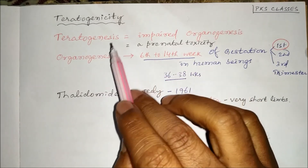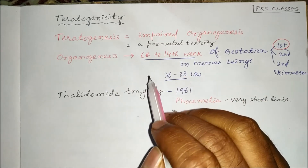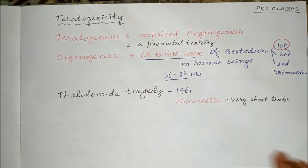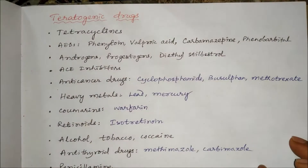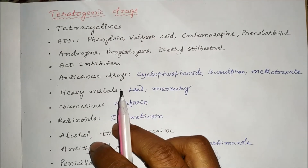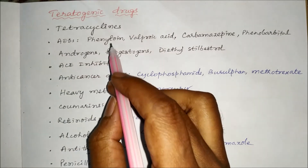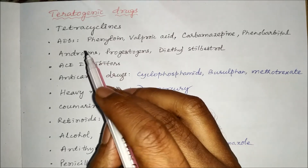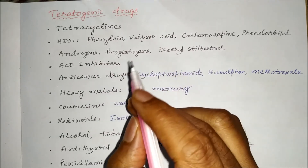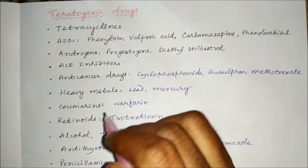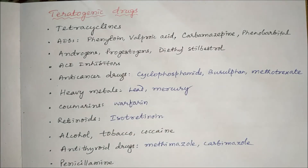Following this, teratogenesis evaluation was included in the drug discovery process. Many drugs are teratogenic — for example, tetracycline; antiepileptic drugs like phenytoin, valproic acid, carbamazepine, and phenobarbitone.